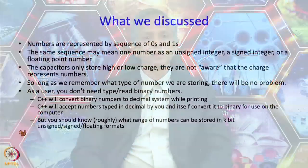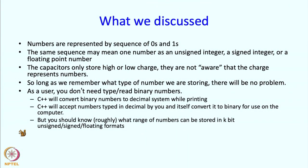In the last segment, we discussed how numbers are represented using sequences of 0s and 1s. We discussed how integers are represented with or without signs and how real numbers are represented. You do not need to worry about binary representation when you write a program, because you only write in decimal and the computer converts it to binary for internal processing. When the computer prints something out, it prints in decimal so we can understand it easily.